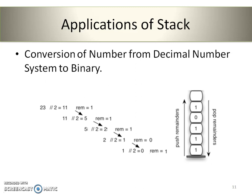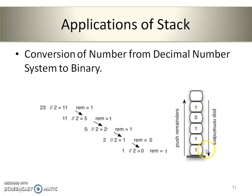Let's look at the next example: conversion of a number from the decimal number system to binary. We consistently find the remainder of a given number by dividing it by 2, since we want to convert to binary. Every time we get a remainder, we store it in the stack. After performing all divisions, we pop the remainders from the stack and get the result in reverse order — which is the binary number equivalent to 23.